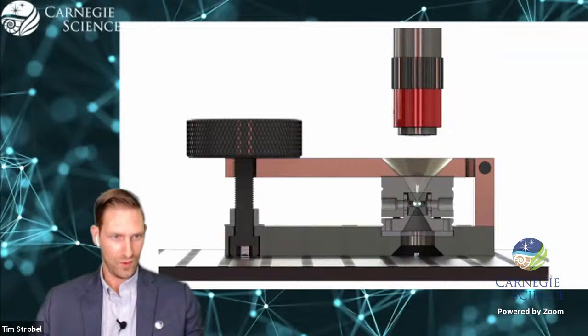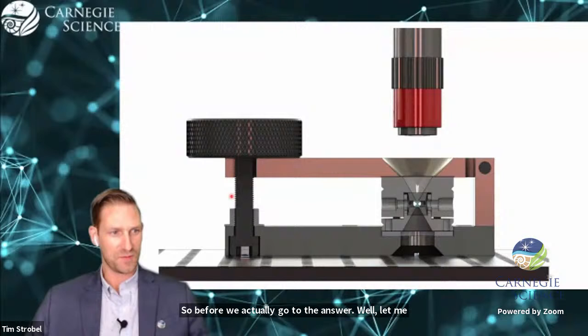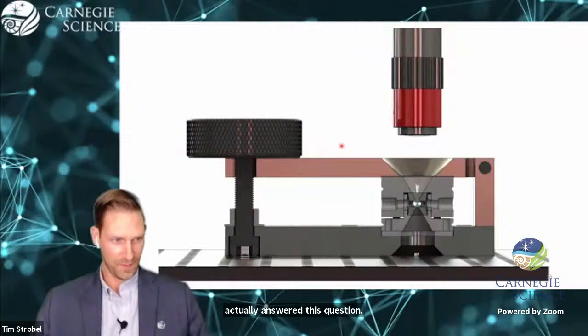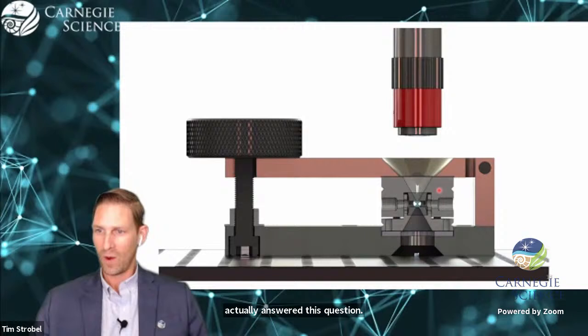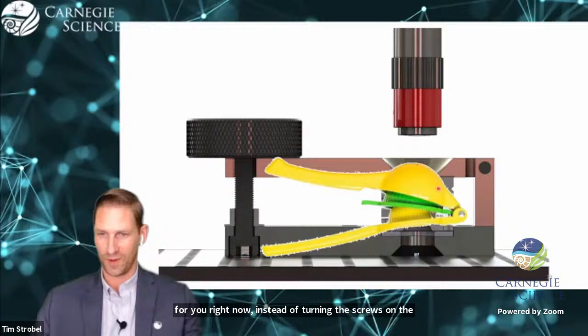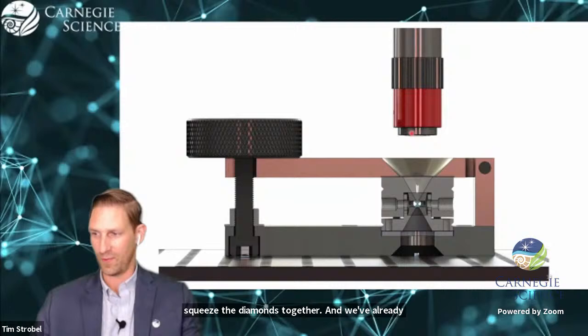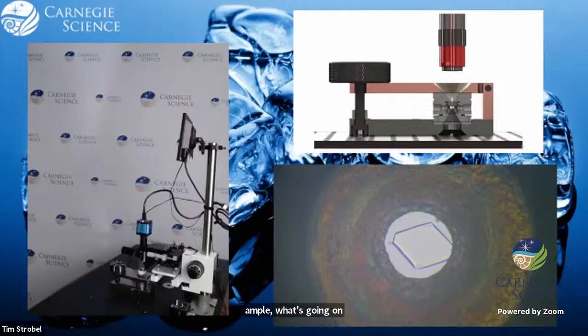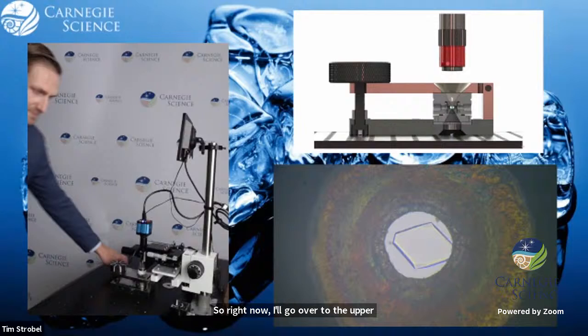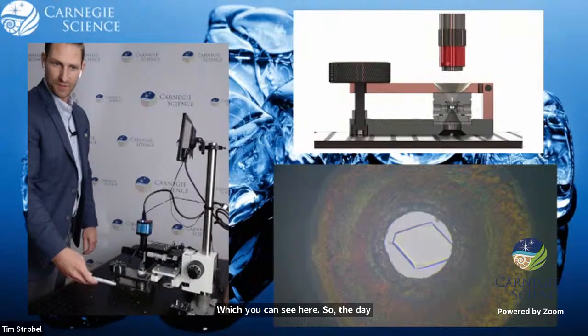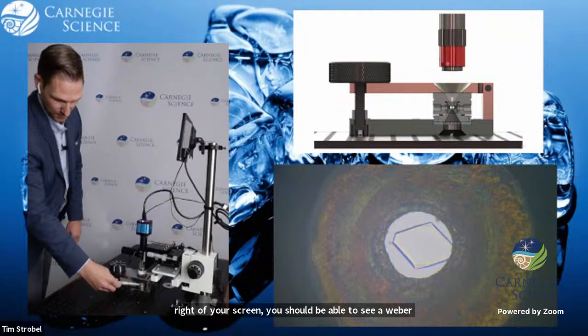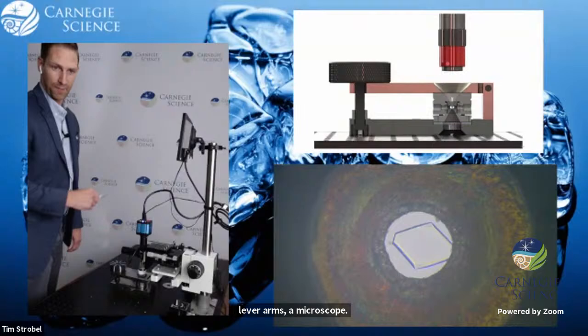Before we actually go to the answer, let's do a live experiment to actually answer this question. We're going to compress a diamond anvil cell live for you right now. Instead of turning the screws on the screen, we're actually going to use a lever assembly. So the diagram in the top right of your screen, you should be able to see the lever to increase the pressure, the diamond anvil cell, the lever arms, the microscope.